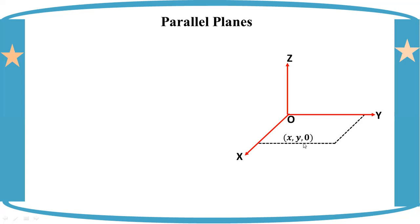For example, here is the x, y, 0. At the x, y, 0. For example, this x, y, 0 is the same as the x, y, 0. So, it's a parallel plane.